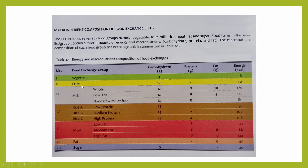For the fruit, it still remains the same. And the milk classification is still the same — whole milk, low-fat, non-fat skim milk, or fat-free milk. Now, one of the major changes in the fourth edition of the food exchange list is the grouping of rice. Because in the previous edition, there is only one group of rice. But now, the rice group is divided into three — rice A, rice B, and rice C — in accordance to their protein content. So you have low-protein, medium-protein, and high-protein rice.